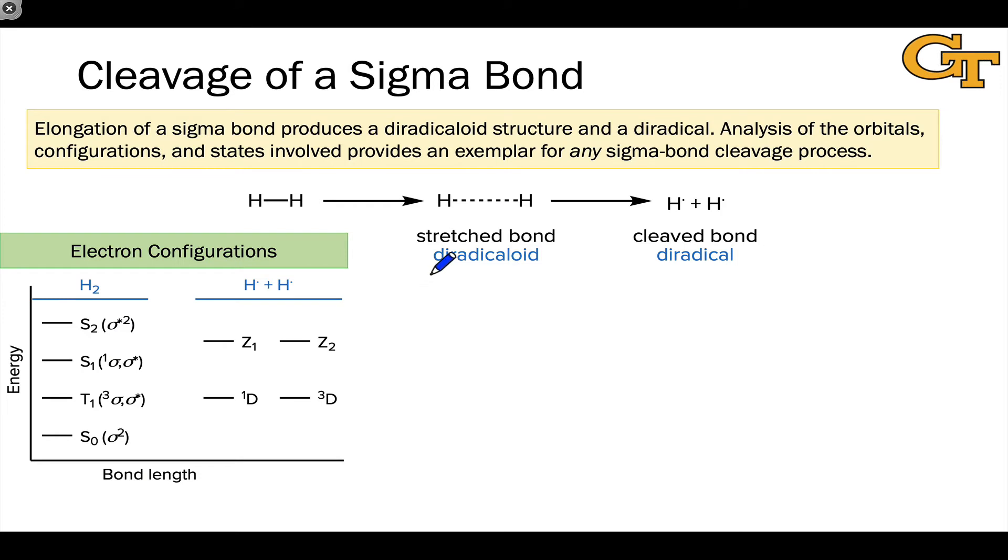When we think through the possible electron configurations for the reactant and the products here, the intact H2 molecule's possible electron configurations just reflect excitations of the electrons to the sigma star orbital in various ways. So S0 has no electrons in the sigma star orbital, sigma squared. T1 is a triplet sigma-sigma* state, S1 a singlet sigma-sigma* state, and S2 is a singlet sigma*² state where both electrons have been promoted to the sigma anti-bonding orbital.